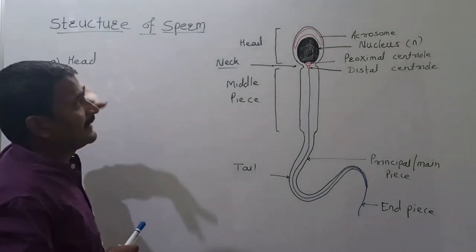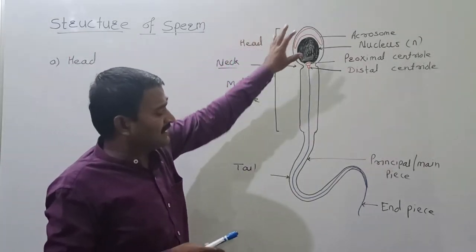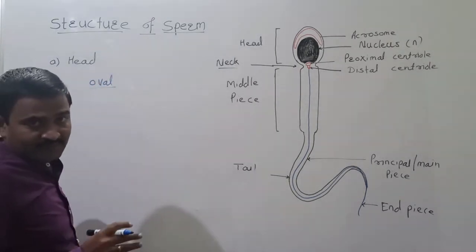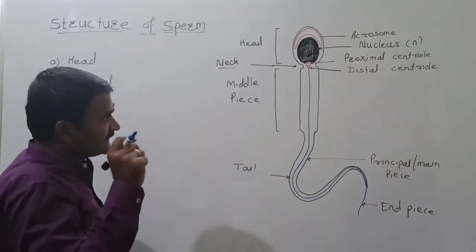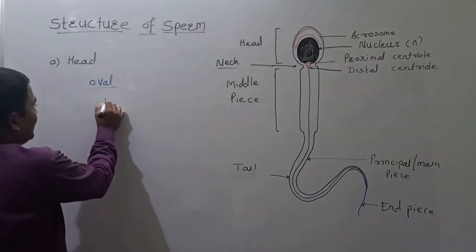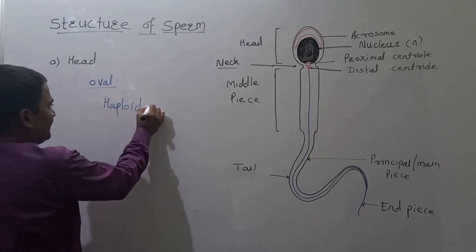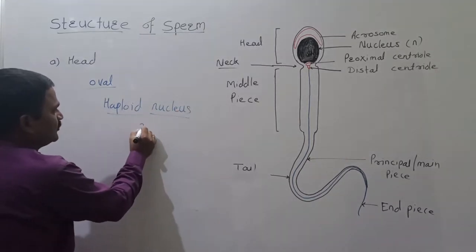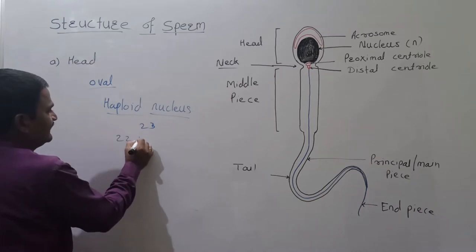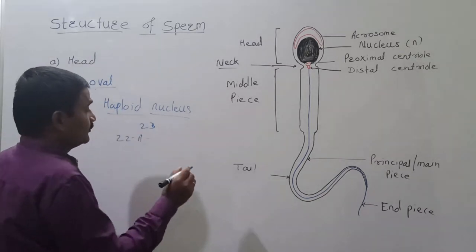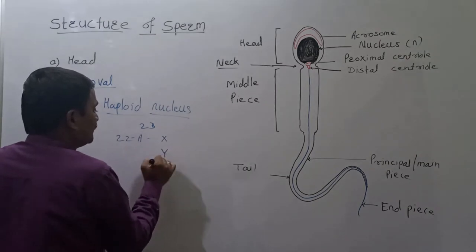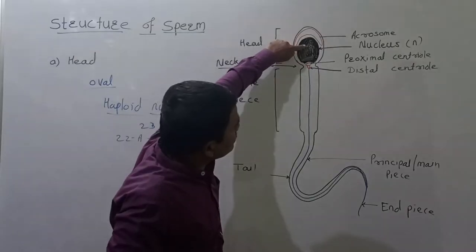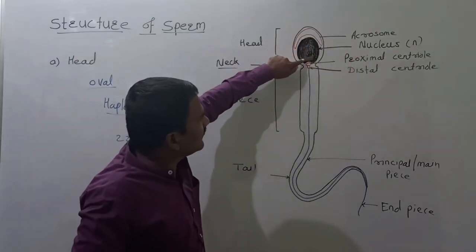The sperm head is structurally oval in shape. The sperm head contains a haploid nucleus. The haploid nucleus means the nucleus with only one set of chromosomes. In one set, there are a total of 23 chromosomes — 22 autosomes and one sex chromosome, either X or Y. This nucleus occupies the whole head.